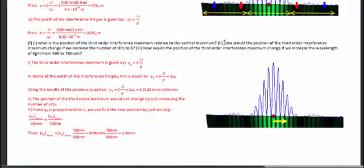The second sub-question asks how the position of the third-order interference maximum would change if we increase the number of slits to 5. The position of the interference maxima does not depend on the number of slits — their shape and sharpness change with more slits, but not their position. So the position of the principal maxima remains the same regardless of the number of slits, as long as everything else stays the same.